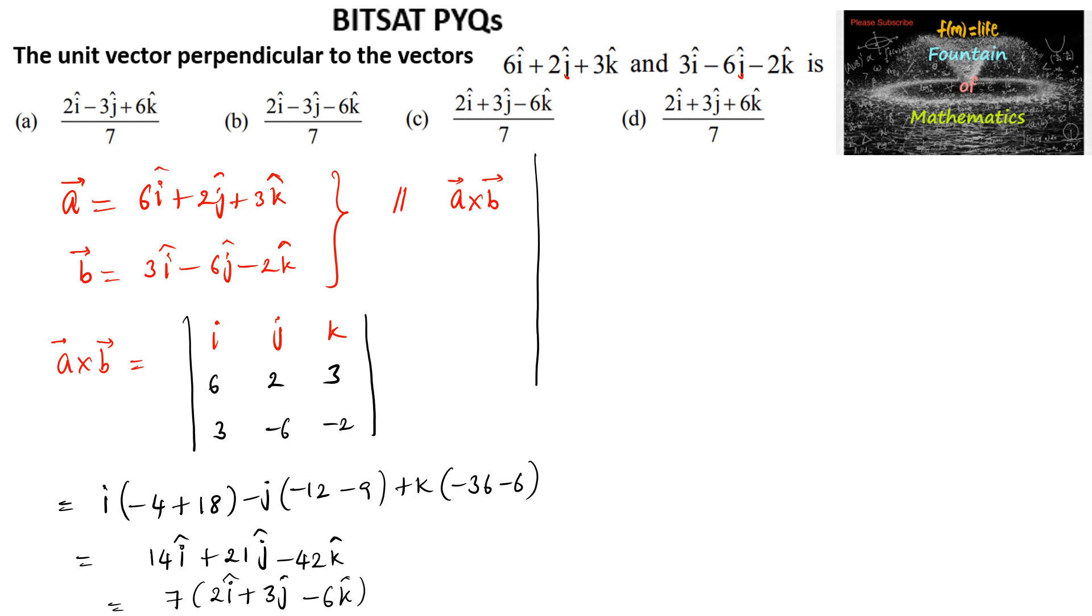And let us also find the modulus of vector a cross b, which is equal to 7 times under root of 2 square plus 3 square plus minus 6 whole square. So that is 7 times under root of 4 plus 9 plus 36, that is 7 under root 49, which is 7 into 7 equals 49.